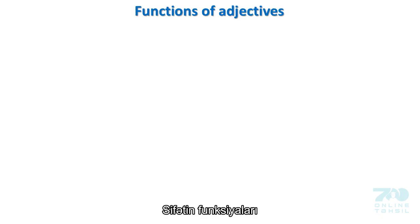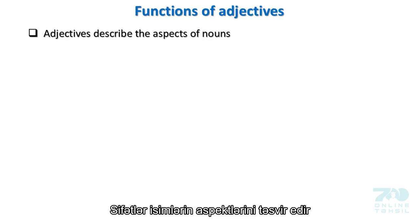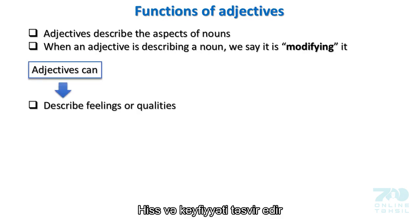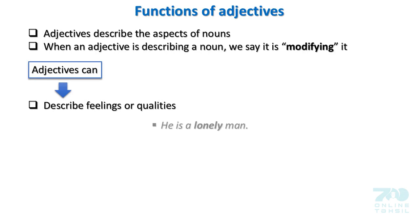Functions of adjectives: Adjectives describe the aspect of nouns. When an adjective is describing a noun, we say it is modifying it. Adjectives can describe feelings or qualities. Examples: He is a lonely man. They are honest.